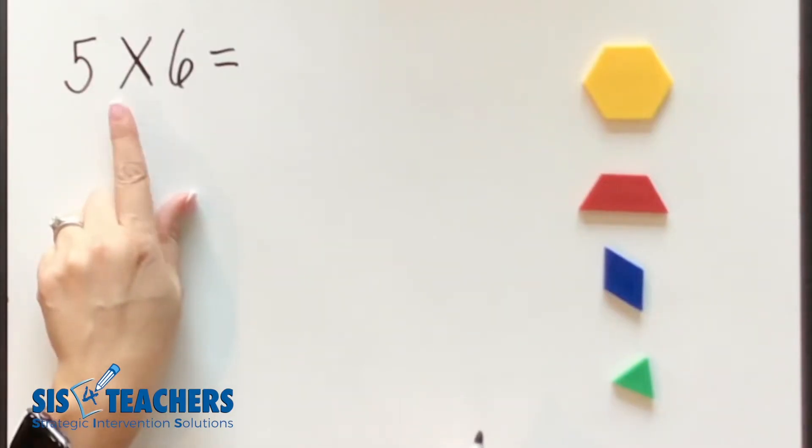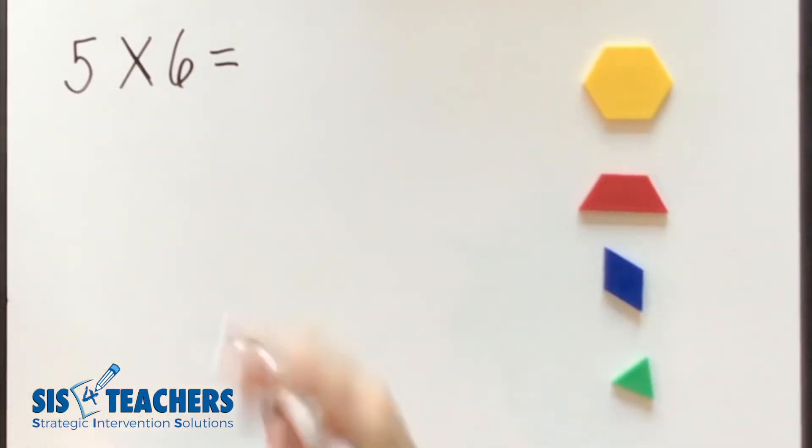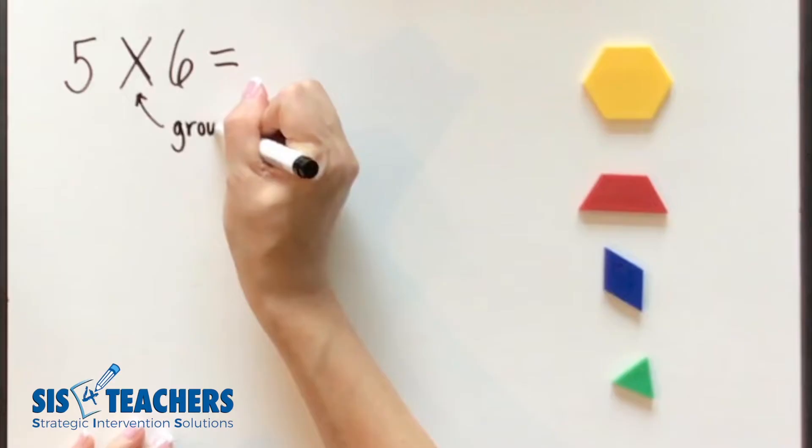Some might think that it means multiply. Some might say that it's times. Some might just tell me that the answer is 30. But we want to know more what does this statement mean? It means five groups of six.